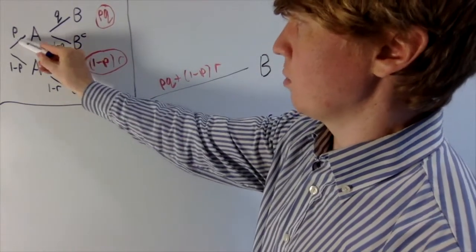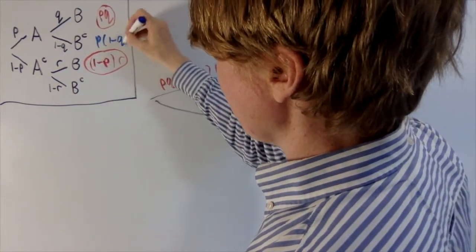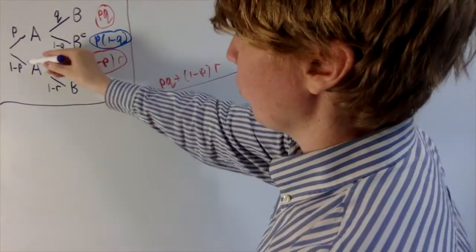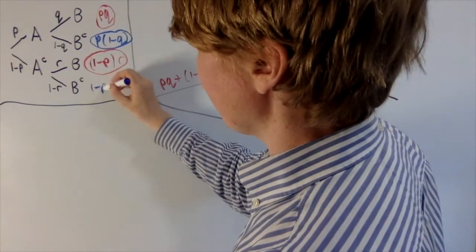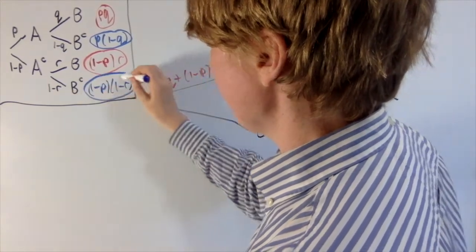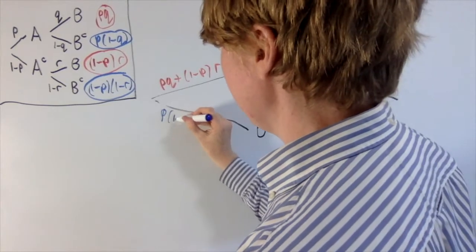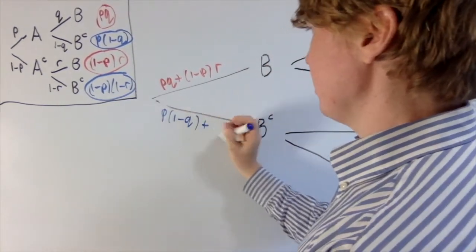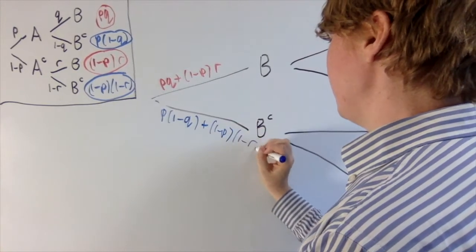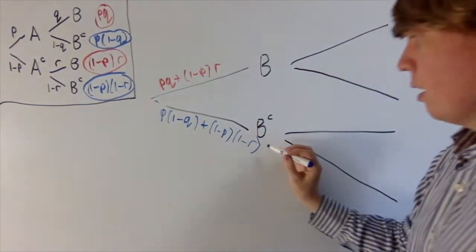You can do the same sort of trick for the probability of not B. Here you multiply along the branch: P times (1 minus Q), and here you've got (1 minus P) times (1 minus R), and then you add these two together. So you get P(1 minus Q) plus (1 minus P)(1 minus R) as your probability of B not happening.